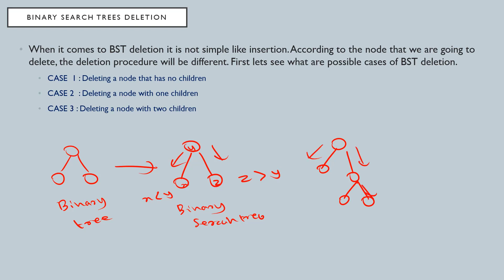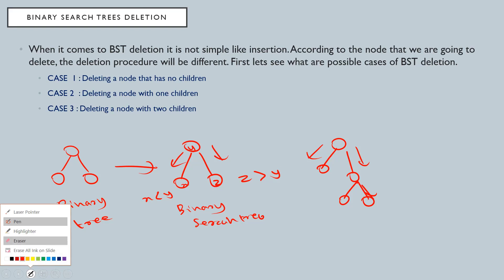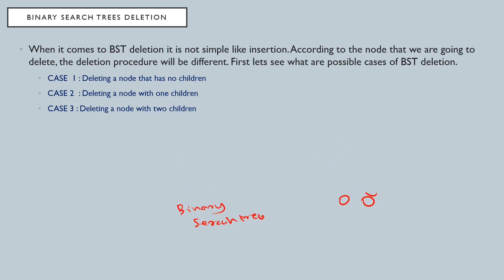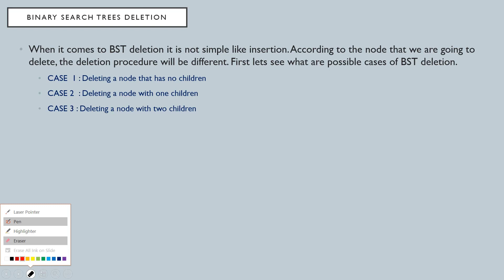Now let's see how deletion works within binary search trees. For deletions, there are three cases. The first case is when the node to be deleted has no children — this is the simplest case. A node with no children is called a leaf, and deletion of a leaf is very simple: we can just delete that node.